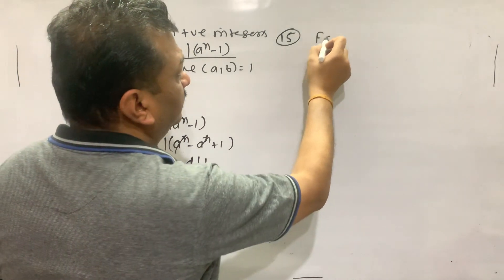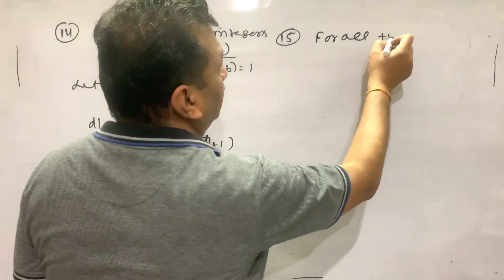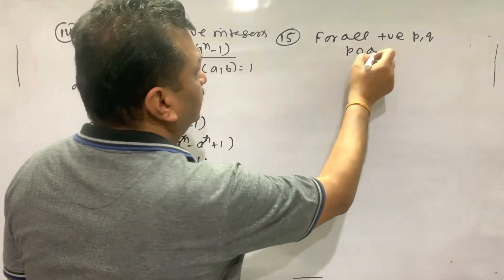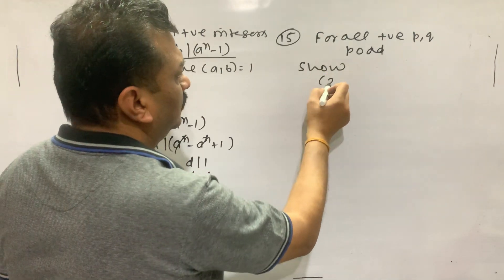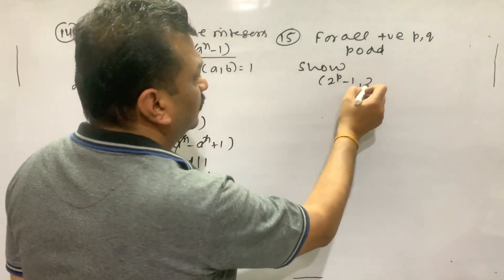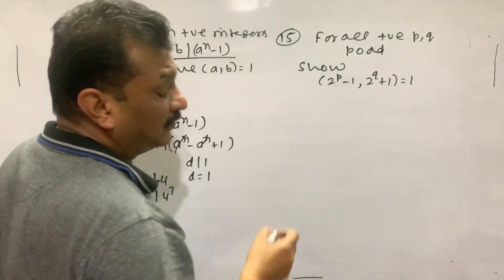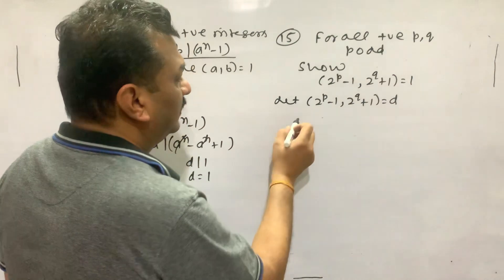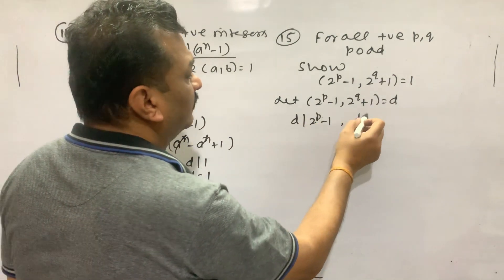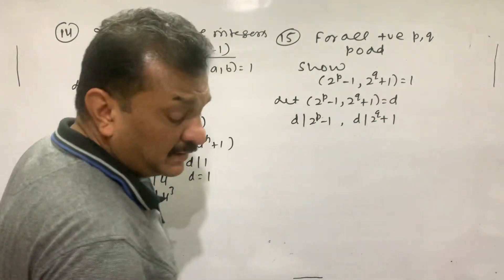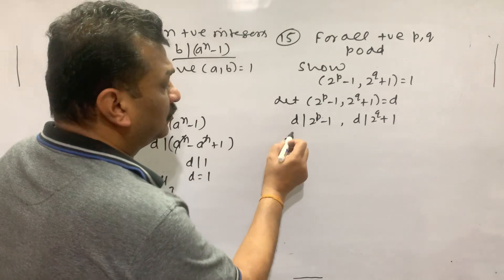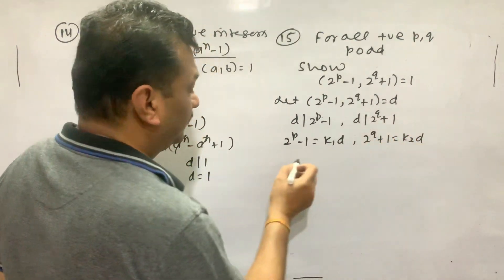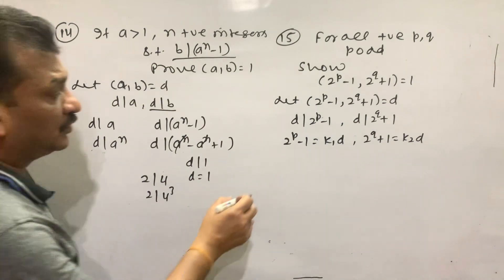Next, fifteenth. For all positive integers p and q, where p is odd, show that GCD(2 to the p minus 1, 2 to the q plus 1) equals 1. Let me take 2 to the p minus 1 greatest common divisor. d divided 2 to the p minus 1, d divided 2 to the q plus 1.